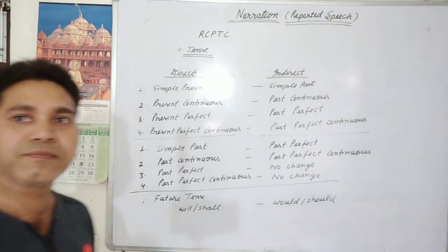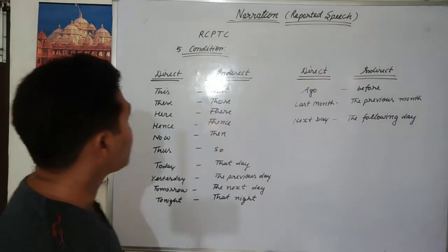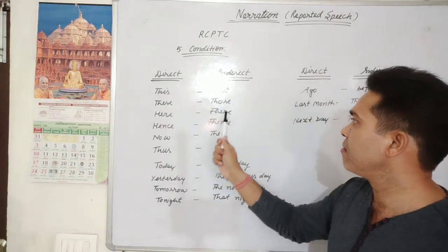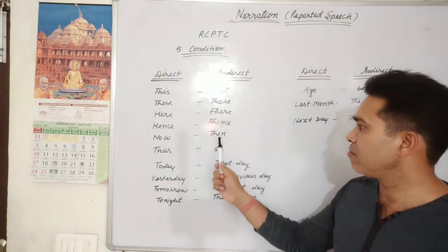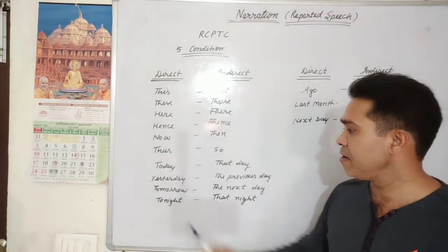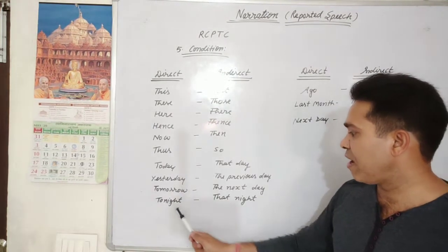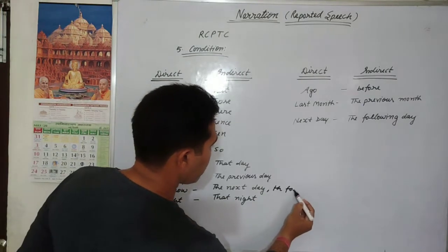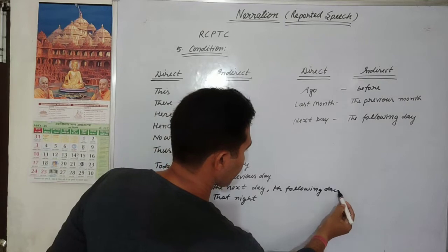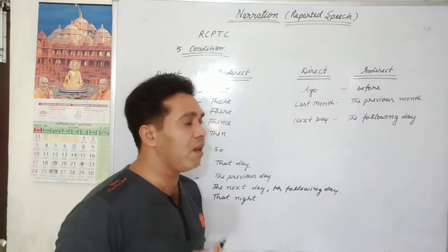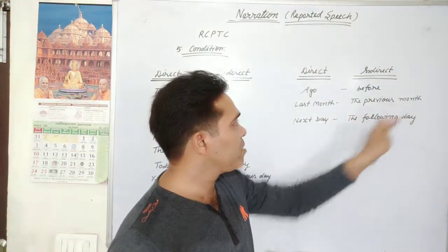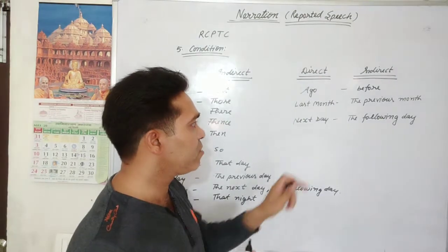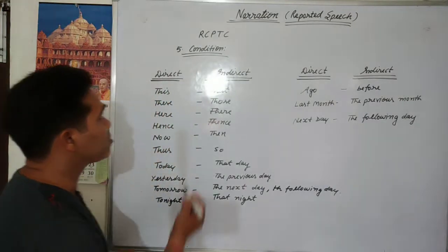C for condition. How do we change time and place words? 'This' becomes 'that', 'these' becomes 'those', 'here' becomes 'there', 'hence' becomes 'thence', 'now' becomes 'then', 'thus' becomes 'so', 'today' becomes 'that day', 'yesterday' becomes 'the previous day', 'tomorrow' becomes 'the next day' or 'the following day', 'tonight' becomes 'that night', 'last month/week/night' becomes 'the previous month/week/night', and 'next day/month' becomes 'the following day/month'.